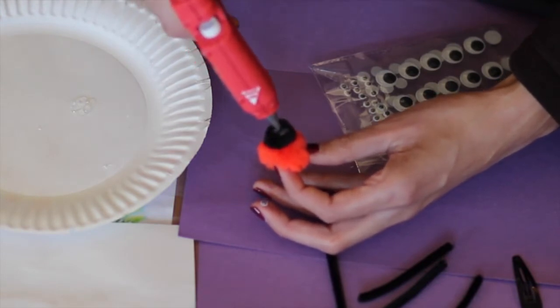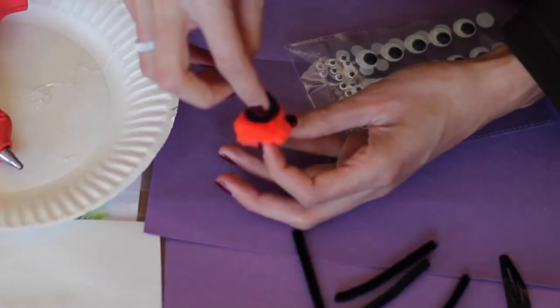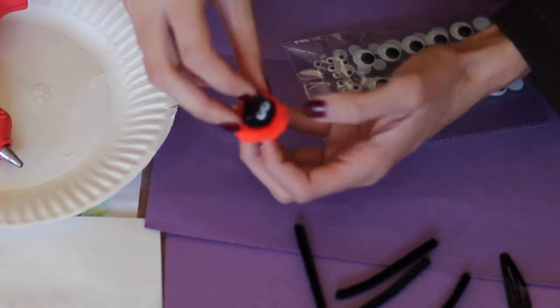And we're going to take a little bit of the glue and put it up there, and then stick the little eyeballs on there. There we go.